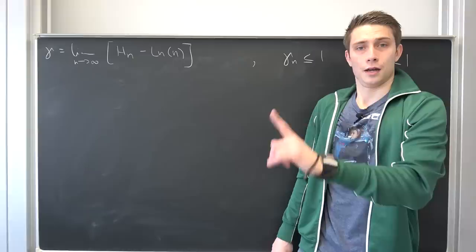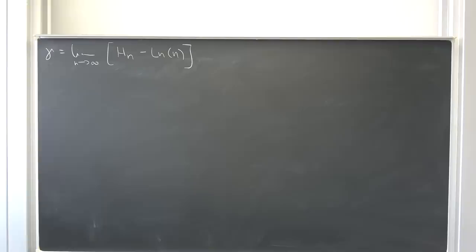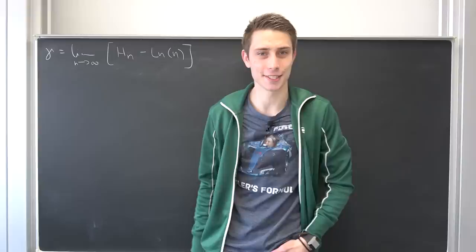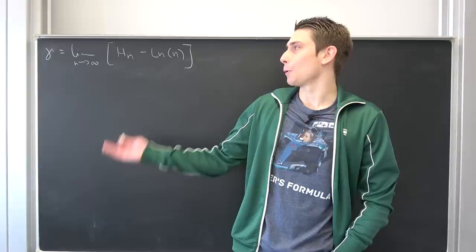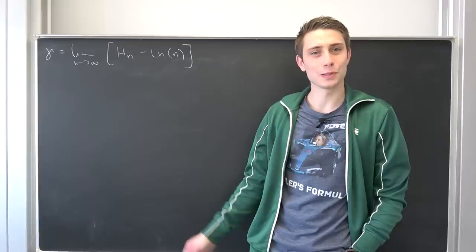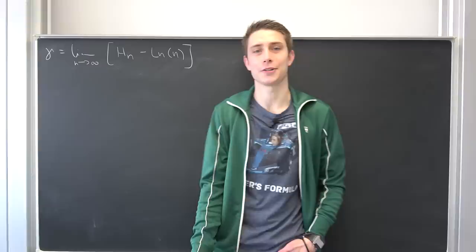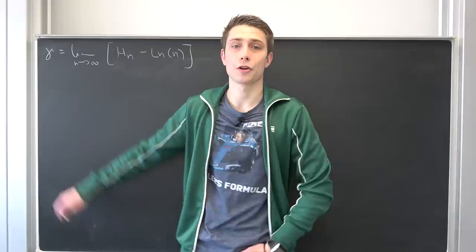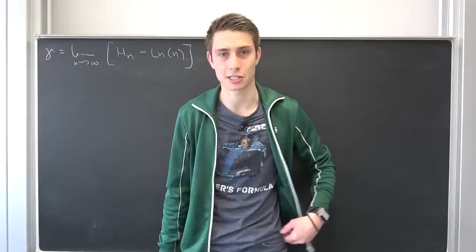Good morning fellow mathematicians, welcome back to another video. It's so much fun doing those videos — last time a little bit of analytical number theory. Today we're going to take a look at a really special number. It's just one of many real numbers, just like your regular old e and pi. The so-called Euler-Mascheroni constant, also formally known as the oily macaroni constant.